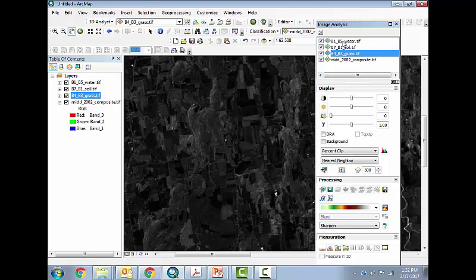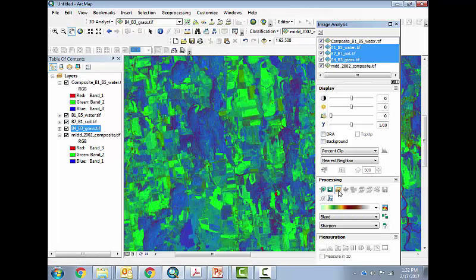All right, so with that in mind, we'll hold Shift, highlight all of these. We'll use the composite button to create a new composite raster. And there it is.